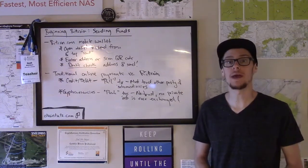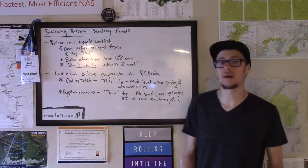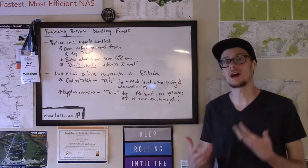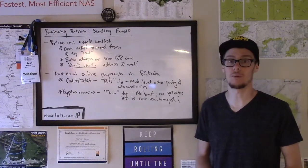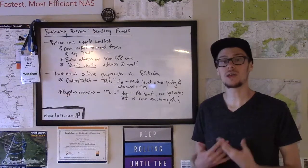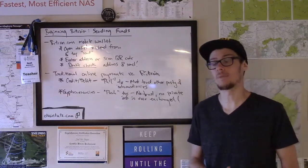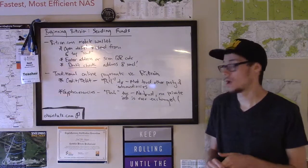With credit and debit card transactions online, these are really pull types of transactions. If you want to buy something from an online merchant with your credit card, they create an invoice and you have to give them private information — your credit card number. The merchant then makes a request through Visa or MasterCard to pull the requested amount from your account. So you're giving them information that has to be kept secure, and you're trusting the merchant not to take more than quoted, and trusting the intermediary not to lose your private information. There are a lot of layers of trust involved.